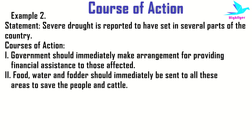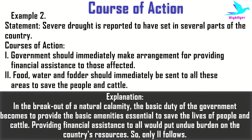Second example: the statement is — severe drought is reported to have been seen in several parts of the country. The first course of action is: the government should immediately make arrangements for providing financial assistance to those affected. The second course of action is: food, water, and fodder should immediately be sent to all these areas to save the people and cattle.